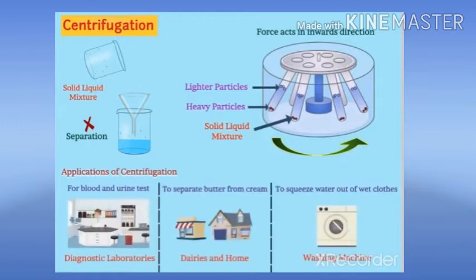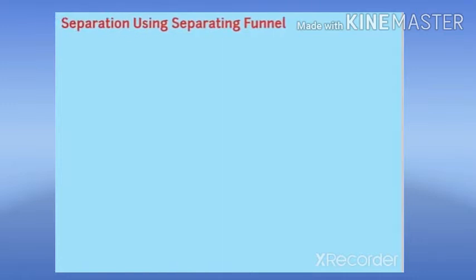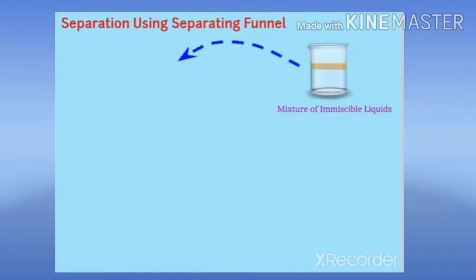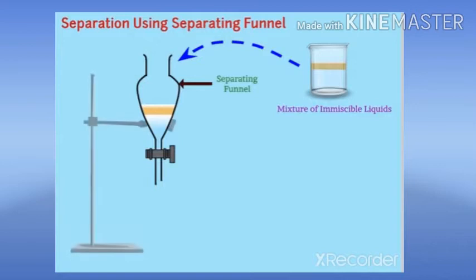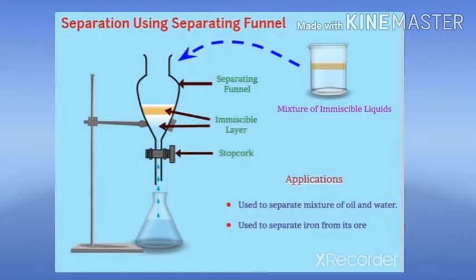Applications of centrifugation. Separation using a separating funnel. This technique is mainly used in the case of a mixture of immiscible liquids. This mixture is poured into a separating funnel and is allowed to stand still. Immiscible layers of liquids are visible, which can be easily separated by opening the stop cork.